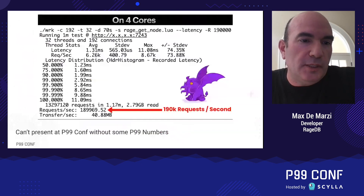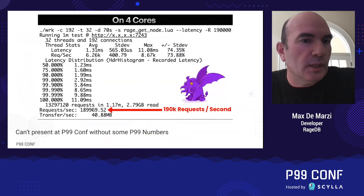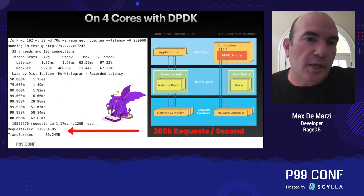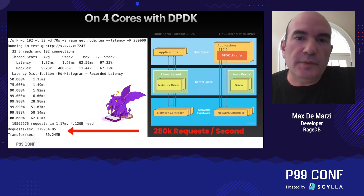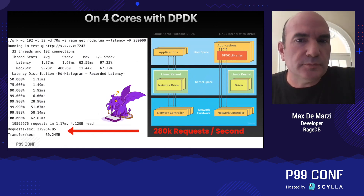You can't be at P99Conf without some P99 numbers. Here's a performance test running 190,000 requests per second using WRK2 — latency is really low and throughput is very high. But we can do better. If we turn on DPDK and run the query again, we jump up to 280,000 requests per second. The data plane development kit lets us skip the network driver and talk to the NIC directly — and this works even on the cloud; these tests were run on AWS. Here I'm just getting a node without properties, so it's a hello world query, but a lot of databases can't even handle hello world at this speed.